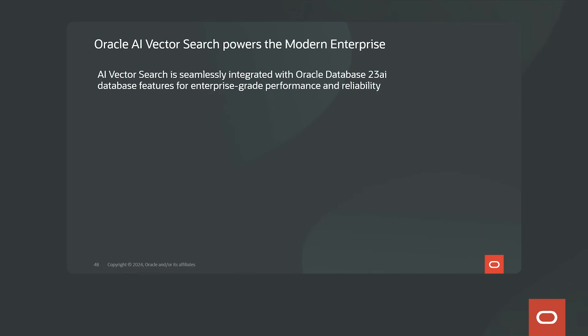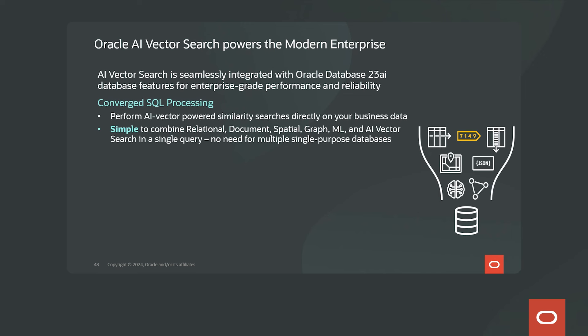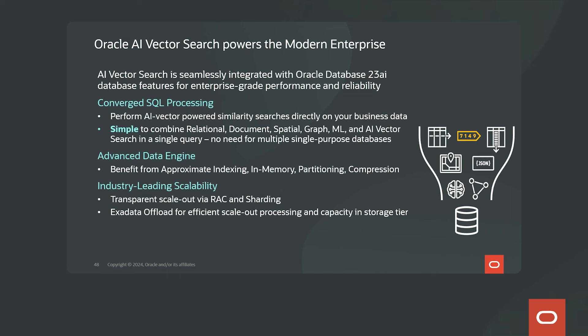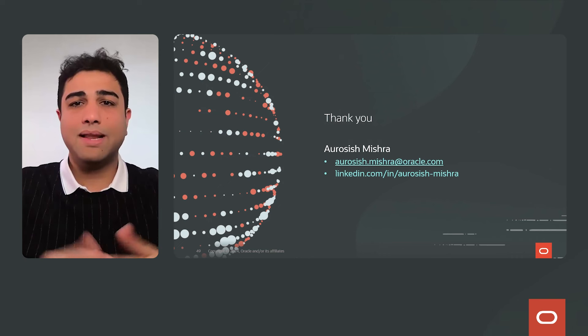In summary, Oracle AI Vector Search has all the building blocks to power the modern enterprise — seamlessly integrated with all Oracle 23 AI enterprise-grade features. You can perform Converged SQL processing combining AI-powered vector search on business data with relational, document, spatial predicates and more, all within one database. We have an advanced data engine with approximate indexing, in-memory processing, partitioning, and compression. Industrial-leading scalability through RAC, sharding, and Exadata scale-out. And users can orchestrate Gen AI pipelines natively in the database or through integrated third-party frameworks. Thank you.